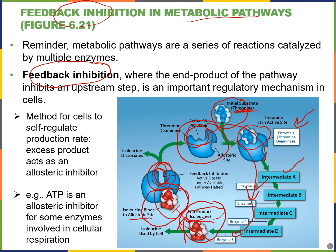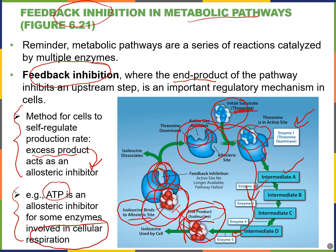Feedback inhibition usually involves an allosteric inhibitor that is also one of the end products of the pathway. This is a really elegant method for cells to self-regulate the production rate of a product — too much of the product acts as an allosteric inhibitor. We'll see in Chapter 7 that ATP itself can be an allosteric inhibitor for some of the enzymes involved in cellular respiration, the focus of our next chapter.